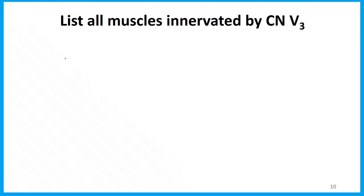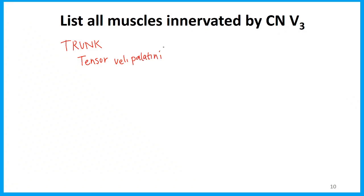Thinking of these in groups: all of these muscles develop with V3 in the first pharyngeal arch. Let's go through the parts of V3. Off the trunk, two muscles are innervated: the tensor veli palatini and the tensor tympani. One other muscle from the trunk is the medial pterygoid muscle.